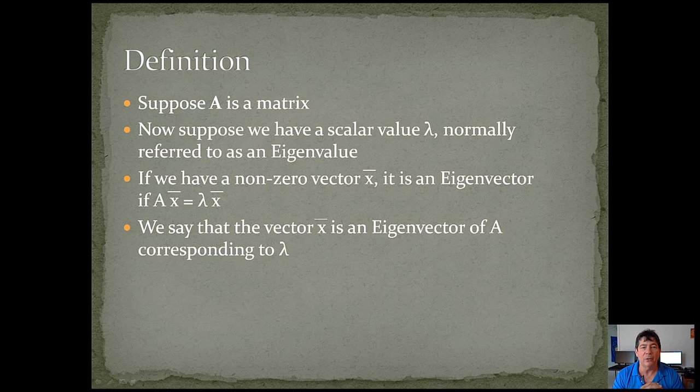So let's suppose that A is some sort of matrix, and it could be any size, n by n, we'll say. Now suppose we have some sort of scalar value, lambda, and normally this would be referred to as an eigenvalue.